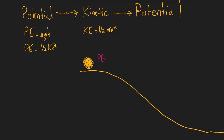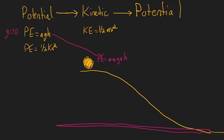The potential energy of the ball equals the mass of the ball times g — the gravitational constant, where g equals 10 — times h, the height of the ball relative to the ground. So PE equals mgh. All of the energy this ball possesses is purely in the form of potential energy.